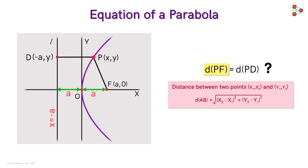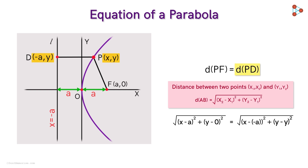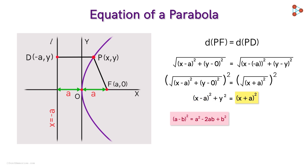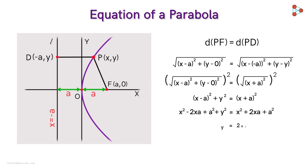Now, can you find the distance between point P and F, and point P and D? We know the coordinates of point P and point F, so according to the distance formula, this distance would be the square root of (x minus A) squared plus y squared. We also know the coordinates of point D, so this distance would be the square root of (x plus A) squared. Setting these equal and squaring both sides, we expand using the identity for (A minus B) squared on the left and (A plus B) squared on the right. Simplifying, we get the equation of the parabola: y squared equals 4Ax.